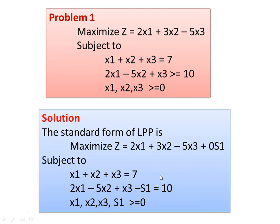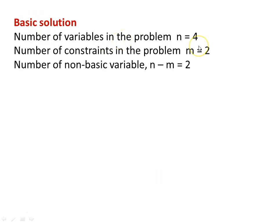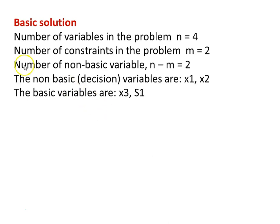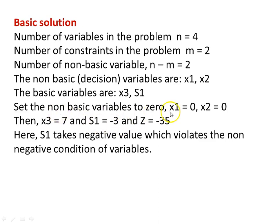In the problem there are four variables: x1, x2, x3, and s1, and two constraints. Number of variables n equals 4, number of constraints m equals 2, so number of non-basic variables is n minus m equals 2. We identify x1 and x2 as non-basic variables and x3 and s1 as basic variables. Setting x1 equal to 0 and x2 equal to 0, we get x3 equal to 7 and s1 equal to minus 1, and z equal to minus 30. This is the starting solution, but it is not correct.